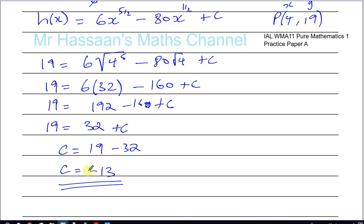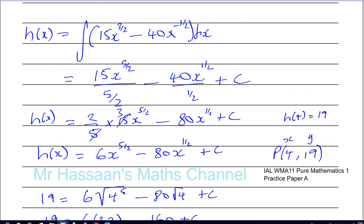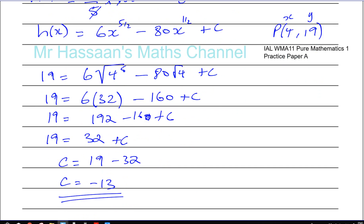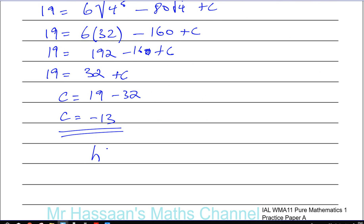And there we have the answer to the question. What does it ask us to do? Find h(x). So now the answer is h(x) is equal to 6 times x to the power of 5 over 2 minus 80 times x to the power of a half and minus 13.